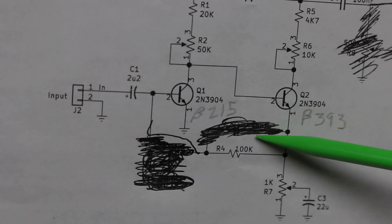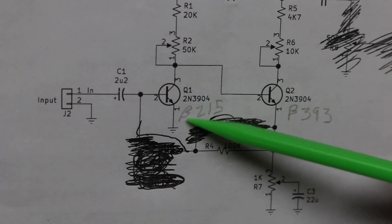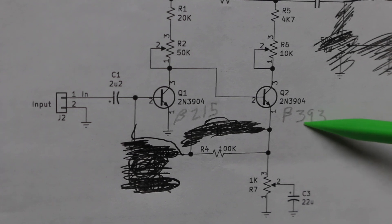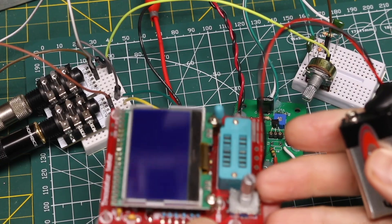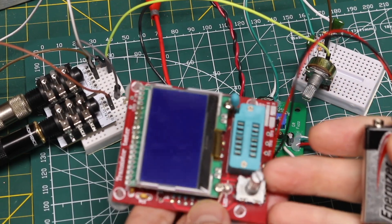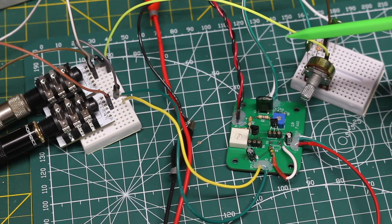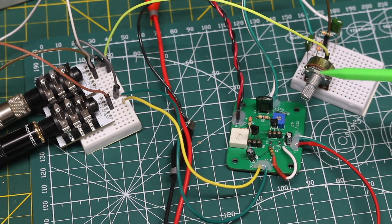And right now, the two NPN transistors, the first one has a beta of 215, and the next one has a beta of 393, as measured on this component tester at least. With this added tone control, I have a 100k pot, and I can shift it between favoring bass, or treble, or some blend of both.